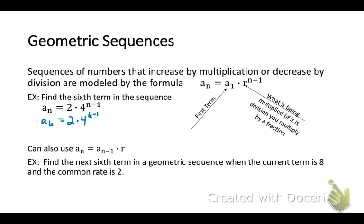Our example says find the sixth term in the sequence. Now I'm plugging in 6 for n. So a sub 6 will equal 2 times 4 to the 6 minus 1. Then I'll simply do the math and find that the sixth term is 2 times 1024, or 2048.